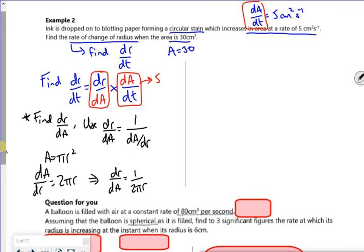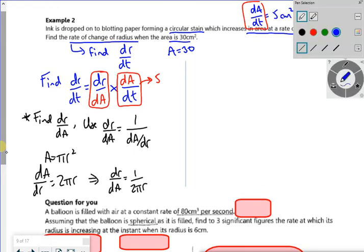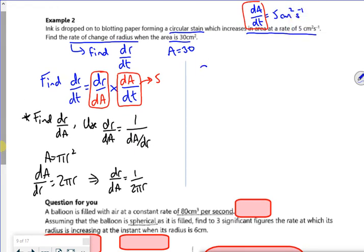So my equation, let's change that to blue, for dr by dt is 1 over 2πr times by 5. So I knew that dA by dt is 5. So I've got dr by dt is 5 over 2πr.